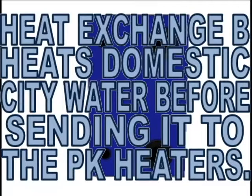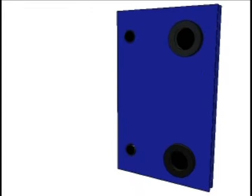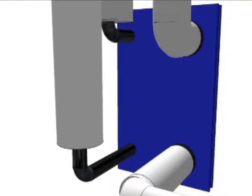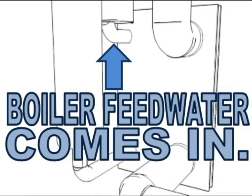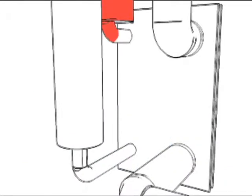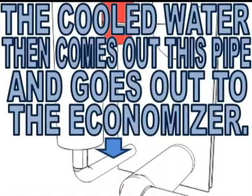Hot boiler feed water comes in through this pipe. Then the cooled water comes out through this pipe before going on to the economizer.